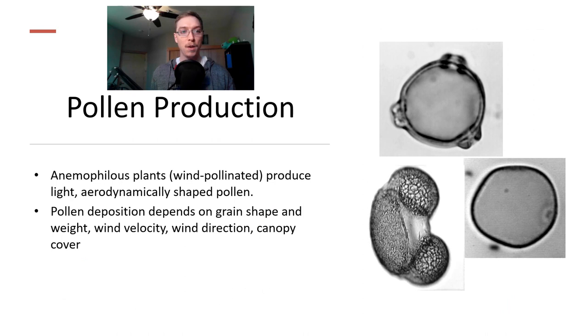Anemophilous plants or wind pollinated plants produce light aerodynamically shaped pollen which is perfect for being distributed by the wind. Pollen deposition depends on grain shape and weight, wind velocity, wind direction and canopy cover. So if we know how far from an epicenter these grains are being distributed we can also make some inferences on what the wind climate must have been like at that time.